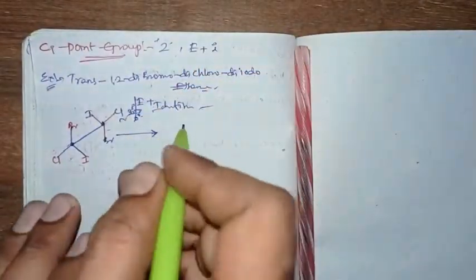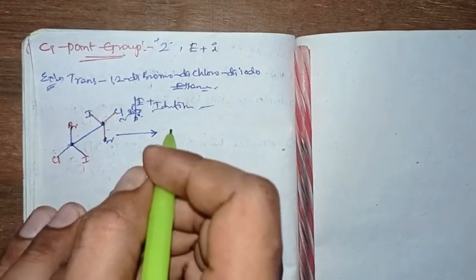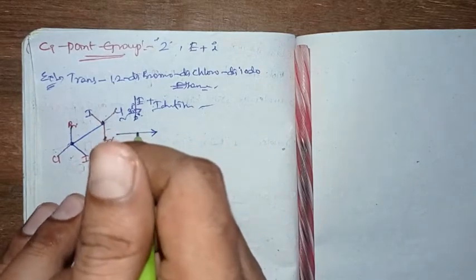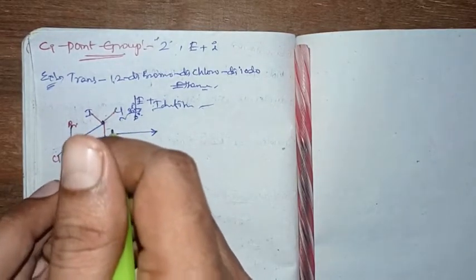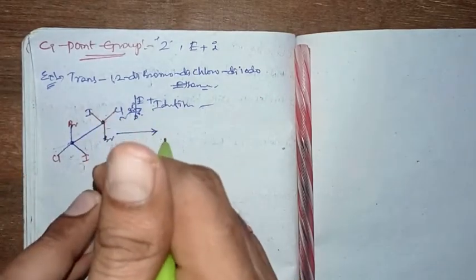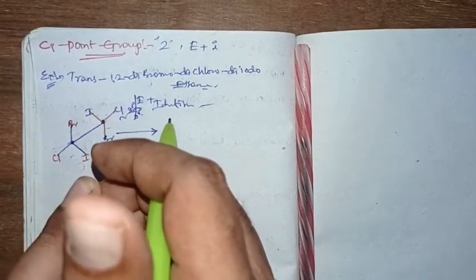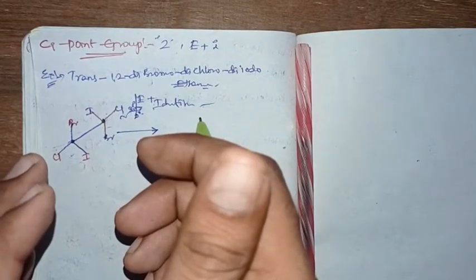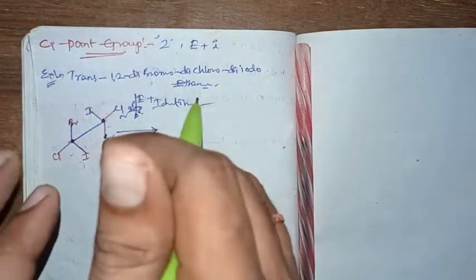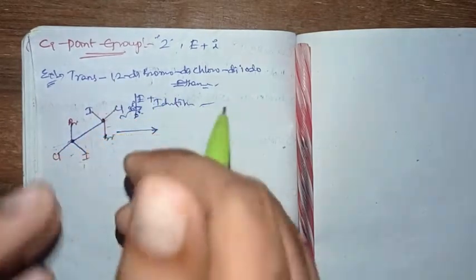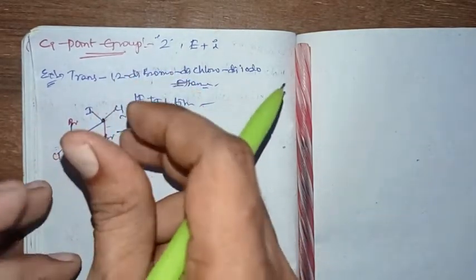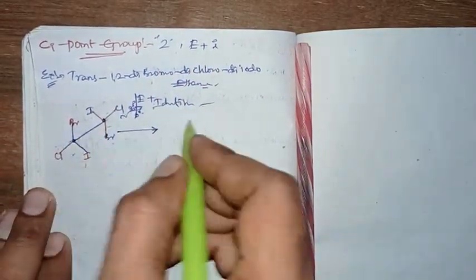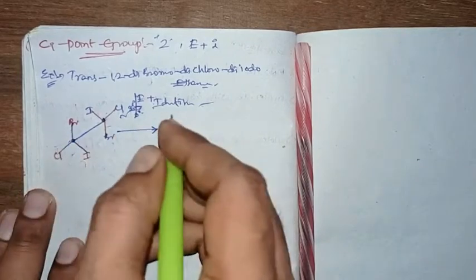So planes also will never be possible. You just check it. If you have any doubts regarding the other elements, just give your doubts in the comment section — I will explain, or if possible, I will give you a separate lecture. So here I am saying: there is no rotational axis, no improper axis, no planes.